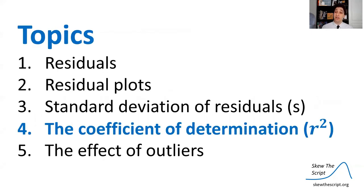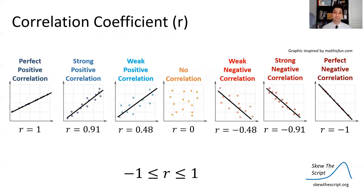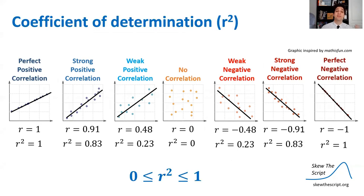Now let's talk about another great measurement of strength: the coefficient of determination, more commonly called R-squared. This relates to R, the correlation coefficient. R-squared is simply: you take R, the correlation coefficient, and square it. So 1 squared is 1, 0.91 squared is 0.83, and so on.